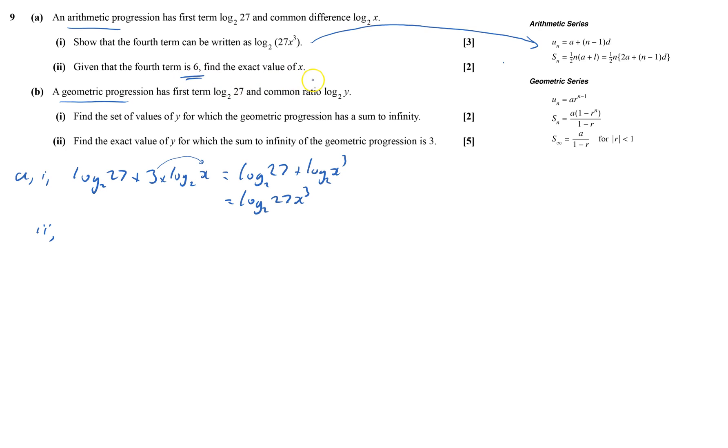Second part, given the fourth term is 6, find the exact value. So that's now saying that the fourth term is 6. We've got to find out what the x is.